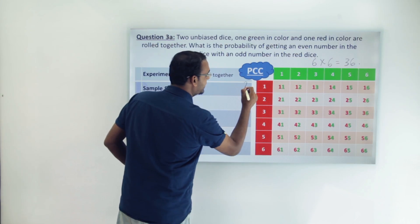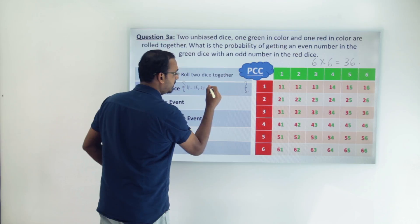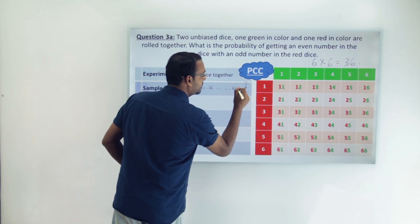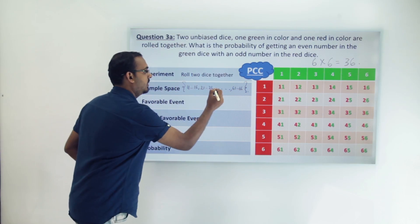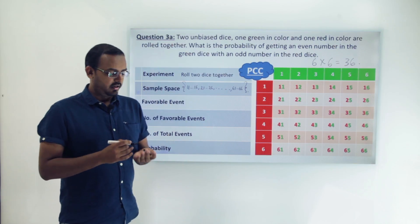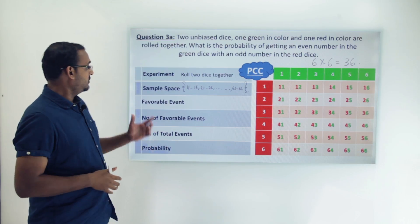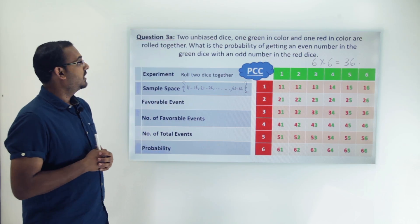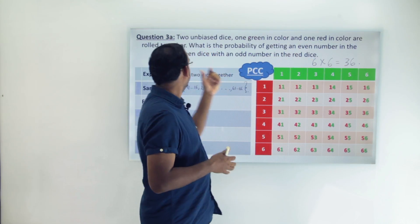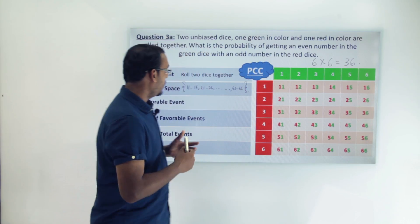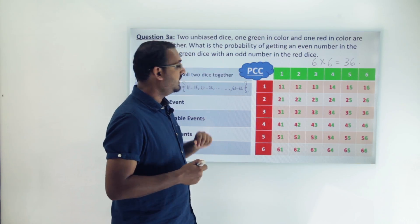We can write the sample space in shorthand as: (1,1), (1,2), ..., (1,6), (2,1), (2,2), ..., (6,6). Now the next thing we need to figure out is the favorable event. Our question asks us to find the probability of getting an even number on the green die and an odd number on the red die, so that is our favorable event.